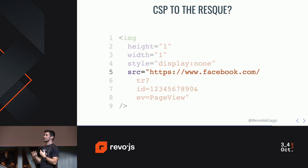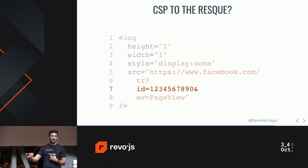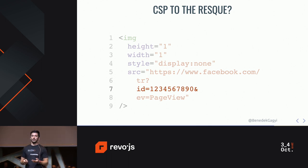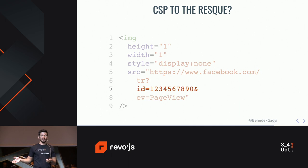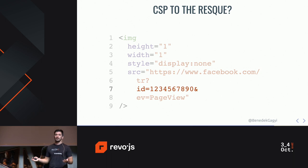But even if the attackers can only add something to the source attribute, they can still do nasty things. For example, they may add a Facebook link — not just a simple Facebook link, but a Facebook tracking pixel that people usually use on their own site to learn more about their users. But if I set the ID to my own Facebook tracking account, I will learn everything Facebook knows about your users. And the thing is that CSP — content security policy — won't help you here if you yourself use Facebook tracking, because adding this kind of image won't be stopped by the CSP rules.